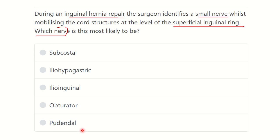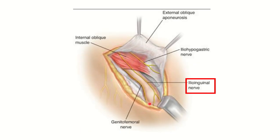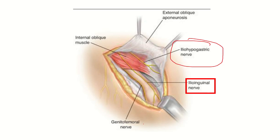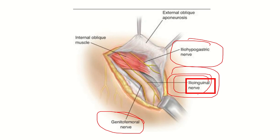Here we can see the inguinal area. In the inguinal area there are three important nerves: the iliohypogastric nerve, the genitofemoral nerve, and the ilioinguinal nerve. These are the three important nerves — iliohypogastric, ilioinguinal, and genitofemoral nerve.